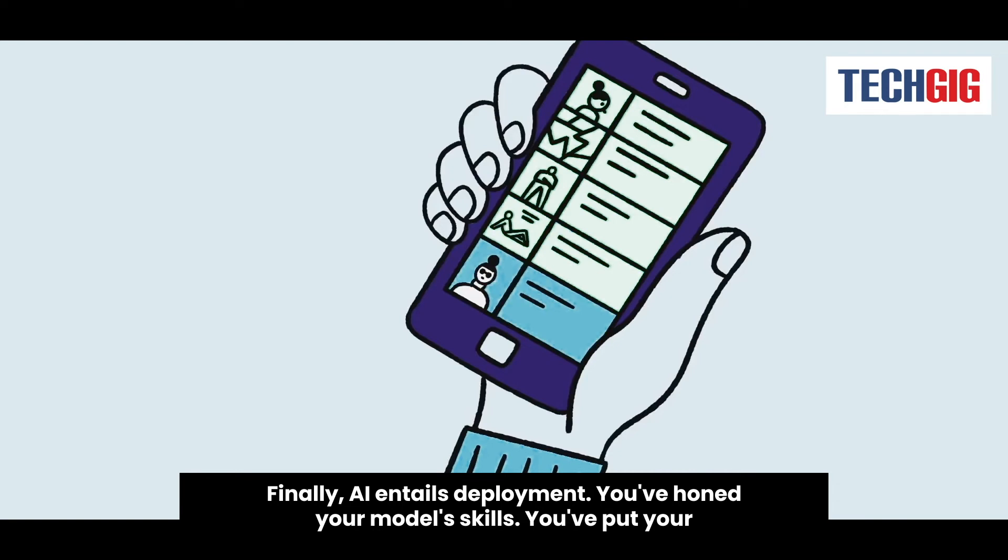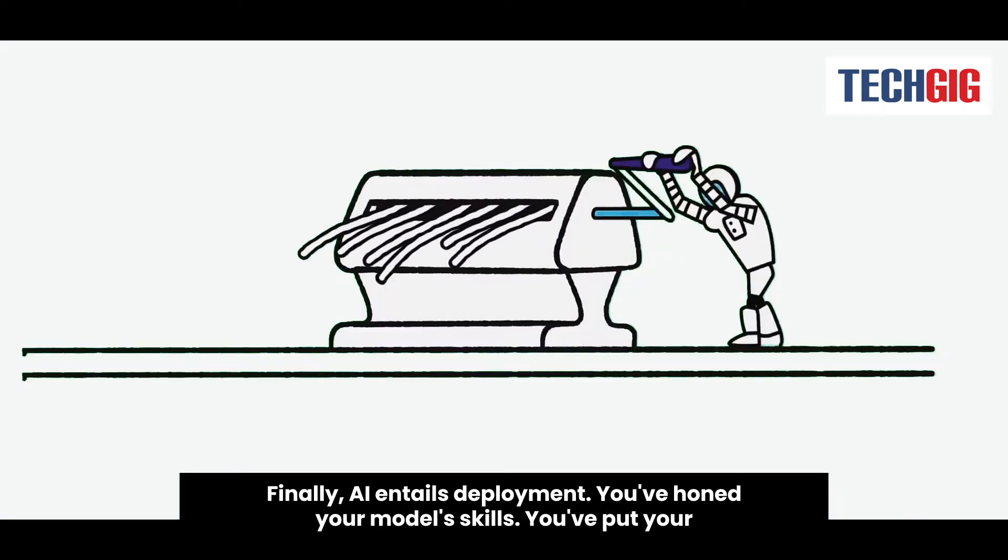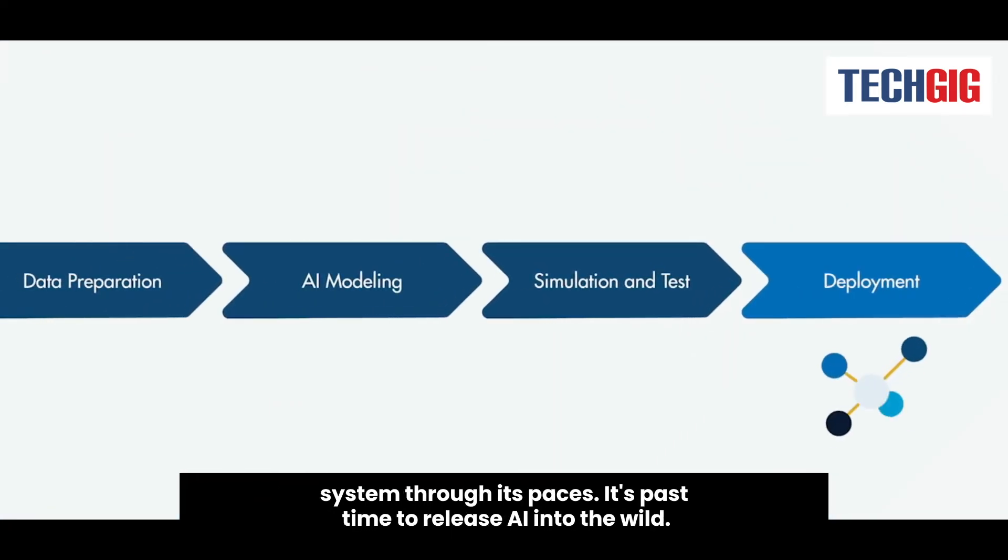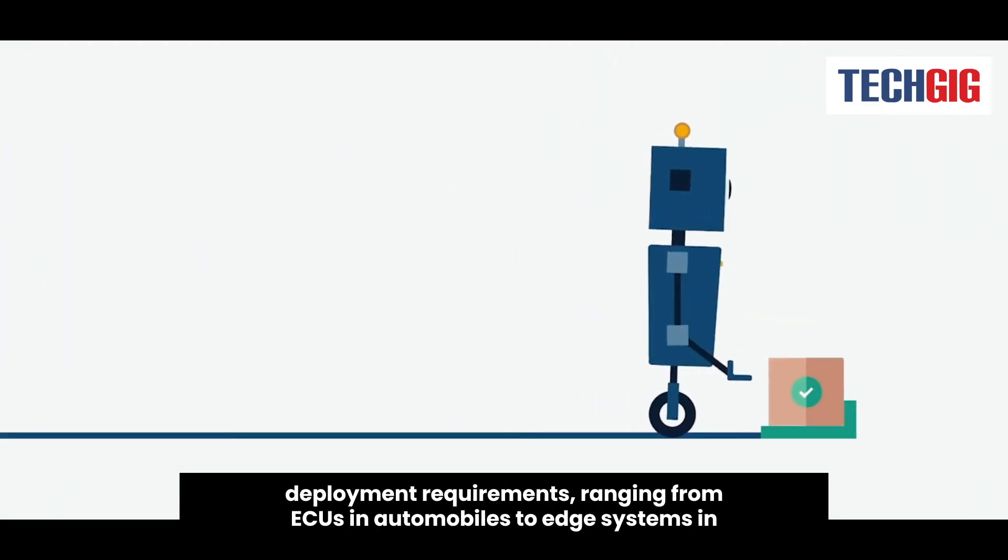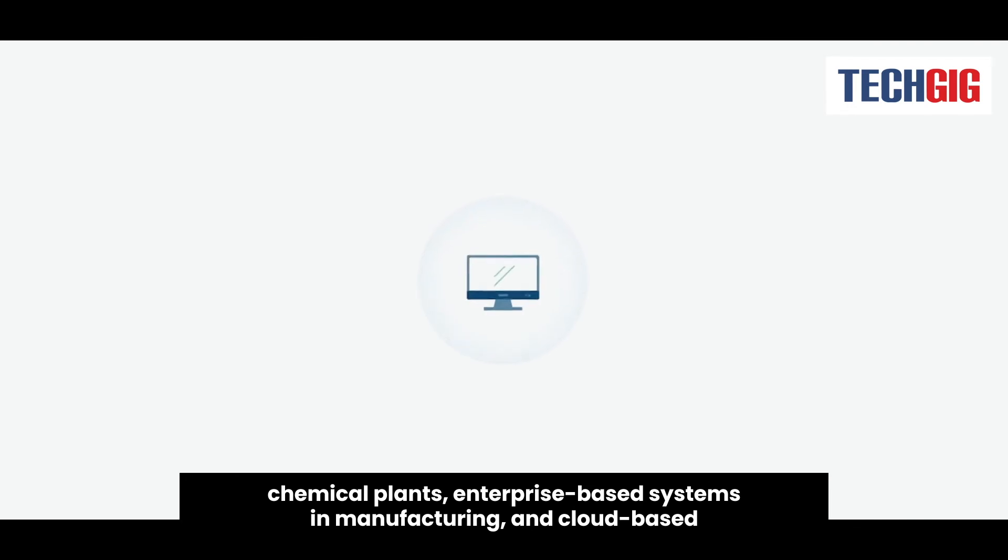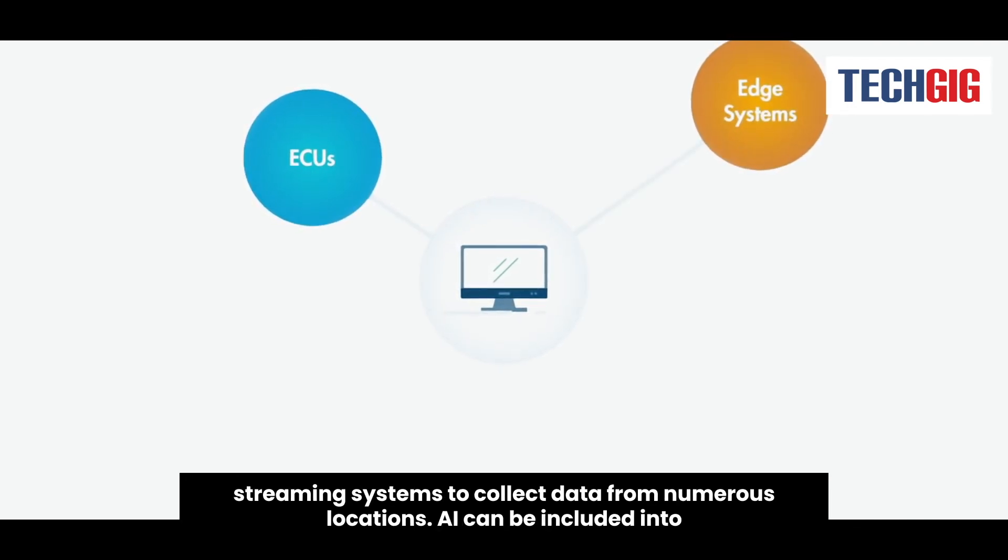Finally, AI entails deployment. You've honed your model skills and put your system through its paces. It's past time to release AI into the wild. Because AI is used in so many different applications, there are many different deployment requirements, ranging from ECUs in automobiles to edge systems of chemical plants, enterprise-based systems in manufacturing, and cloud-based streaming systems to collect data from numerous locations.